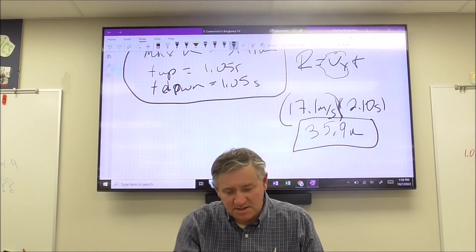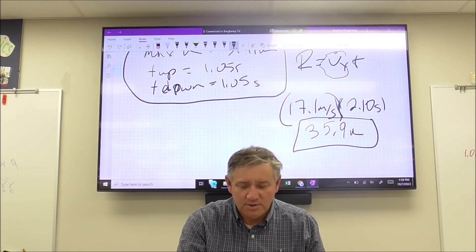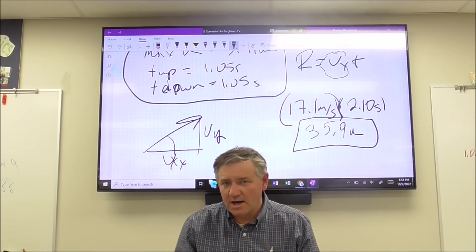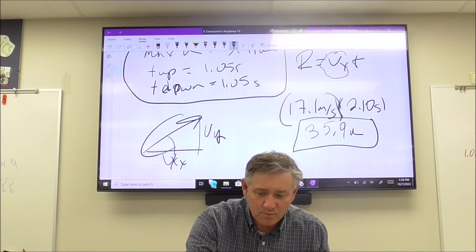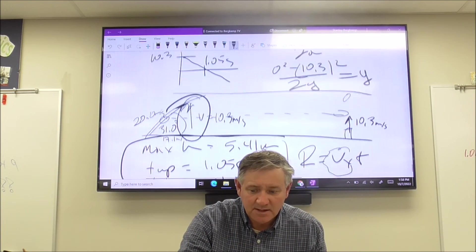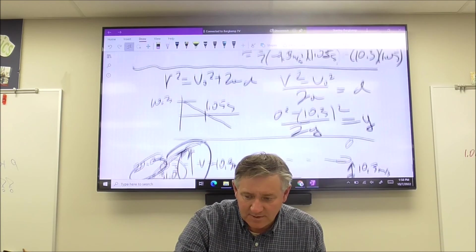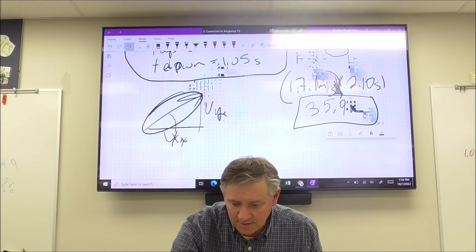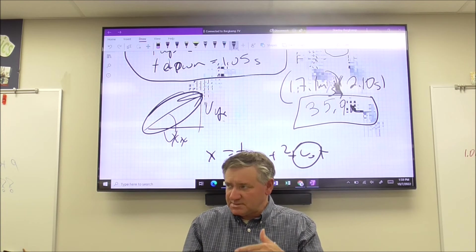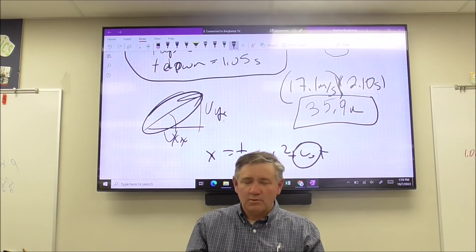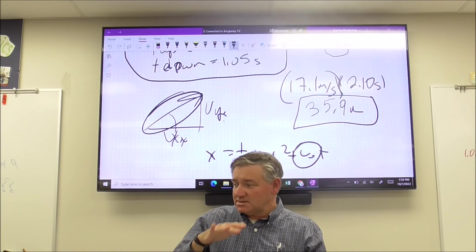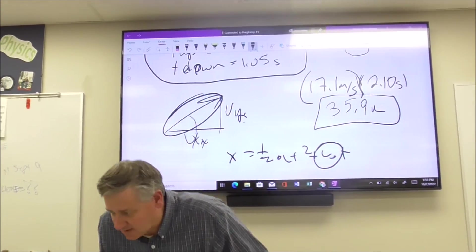When something is launched at an angle, find vy and vx first - what happens in y stays in y, what happens in x stays in x - and then once you decompose that velocity, never speak of it again. The most common mistake is that students see 20 meters per second and try to plug it into x equals one-half at squared plus v-naught times t. Don't do that - the gravity mafia only controls Vegas, the vertical.